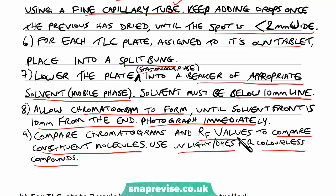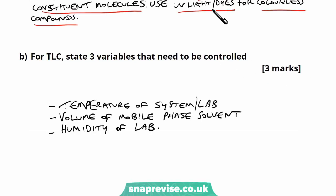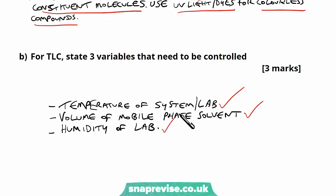Part B says for TLC — thin layer chromatography — state 3 variables that need to be controlled. This is only 3 marks, so it's literally just a case of stating these variables. Controls include the temperature of the system or the lab, because temperature can affect how pigments move and molecules may evaporate at different temperatures. Also the volume of the mobile phase solvent, the humidity of the lab, the pH of the solvent, or the amount of tablet added. Anything that must be kept the same for a logical reason would be acceptable.